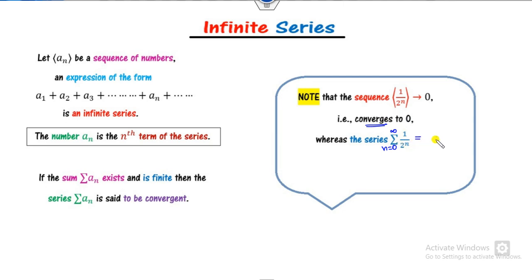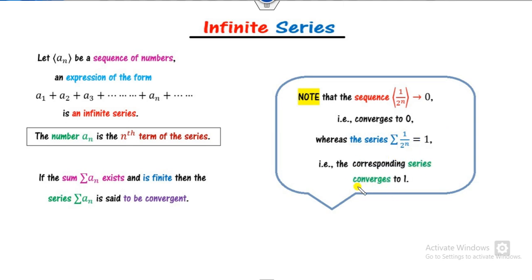This is the GP series. The sum of the GP series is 1 upon (1 minus r). If you start from n equal to 1, it will be (1/2) upon (1 - 1/2), which equals 1. So we say the corresponding series converges to 1 when n starts from 1 to infinity. The sequence converges to 0, but the series converges to 1.